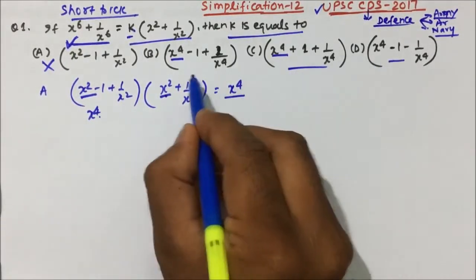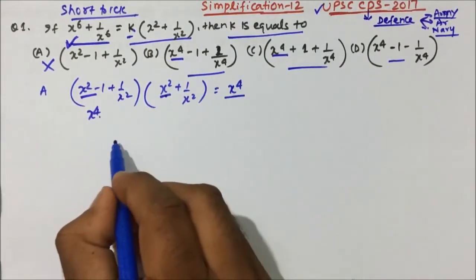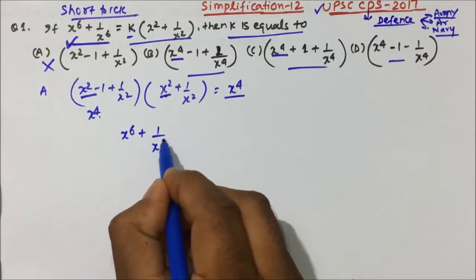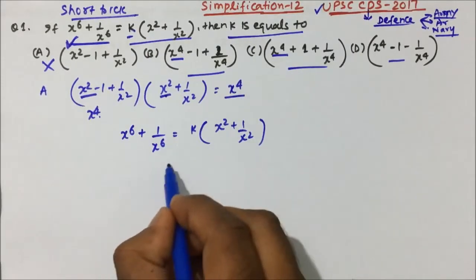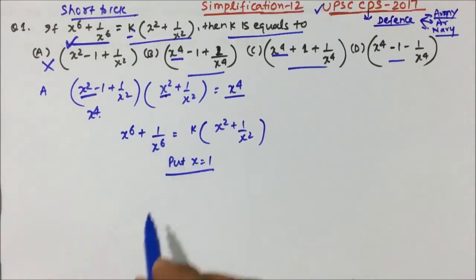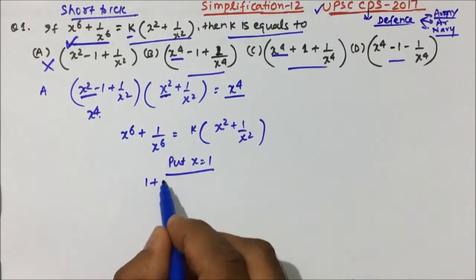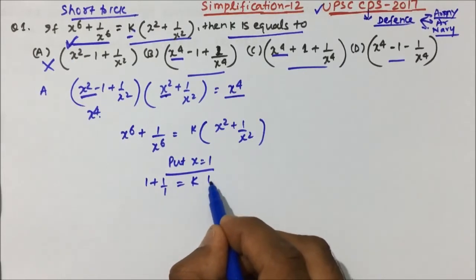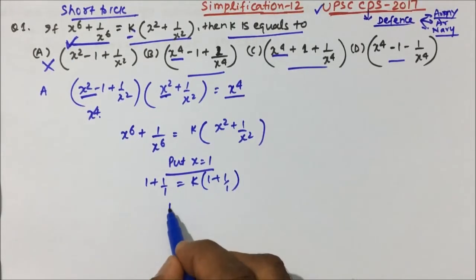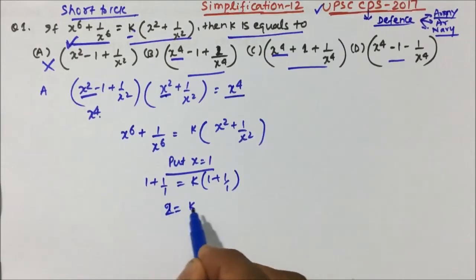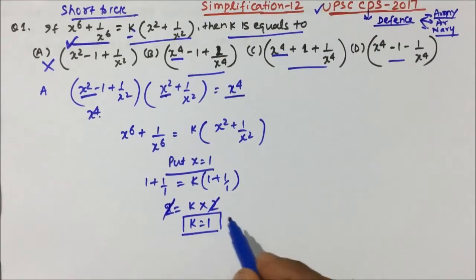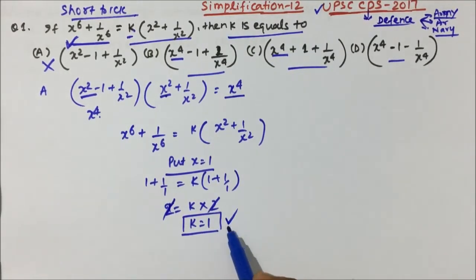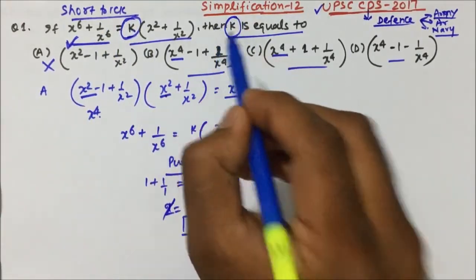Now we have three options, out of which one will be correct. The question is x to the power 6 plus 1 divided by x to the power 6 equals k into x squared plus 1 by x squared. Now put the value of x squared equal to 1. Then it becomes 1 plus 1 by 1 equals k into 1 plus 1 by 1, so 2 equals k into 2, which gives k equals 1.